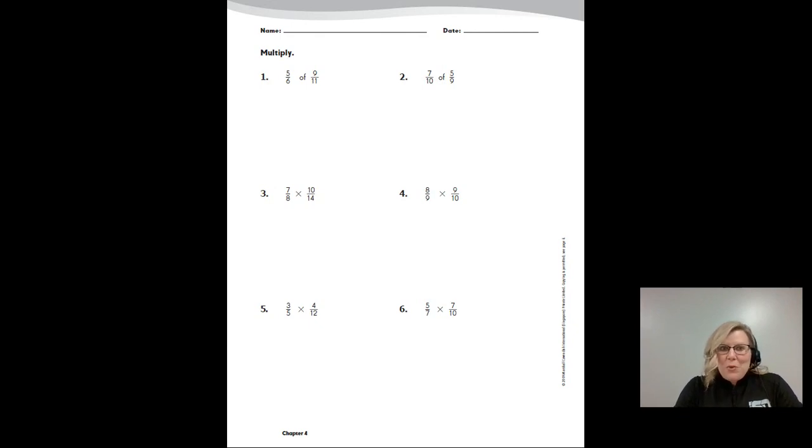If you look at number one on your page, it says five sixths of nine elevenths. Five sixths of nine elevenths means five sixths groups of nine elevenths, and when we make groups of, we are multiplying.